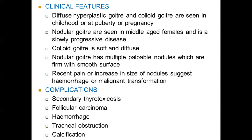Nodular goiter also shows diffuse enlargement of the gland but with multiple palpable nodules giving it a nodular surface; individually each nodule has a smooth surface and firm consistency. Patients may give a history of recent pain or sudden increase in size, which usually suggests hemorrhage into a nodule or malignant transformation. The classical features of thyroid swelling include movement on deglutition; the swelling moves on swallowing but does not move on protrusion of the tongue, differentiating it from a thyroglossal cyst. Horizontally it has no independent mobility, moving with the trachea, and vertically it has restricted or no mobility.